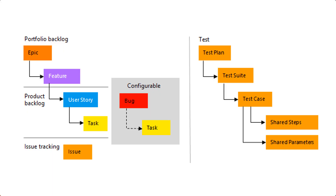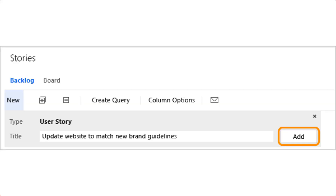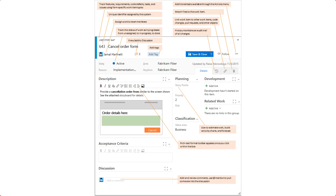In the Agile process, user stories and tasks are used to track work, bugs track code defects, and epics and features are used to group work under larger scenarios. As your work progresses, you update the workflow state from New, to Active, to Resolved, and Closed. When you add a user story, bug, task, or feature, you create a work item. You can also define user stories and bugs to track code defects.